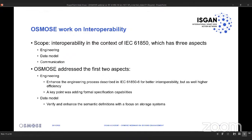In Osmos, we looked more closely into the first two aspects: engineering and the data model. With regard to engineering, one of our goals was to enhance the engineering process described in part six of IEC 61850, with the aim of having better interoperability, but also a higher engineering efficiency to design and build projects.